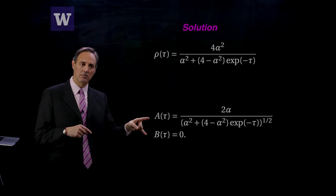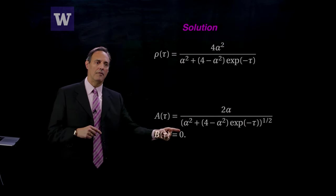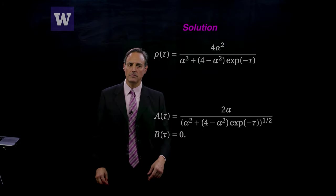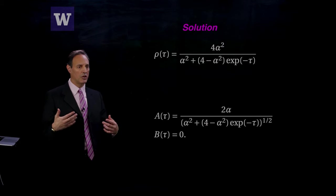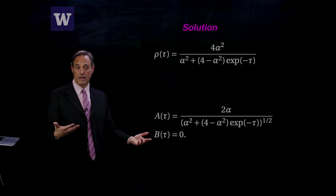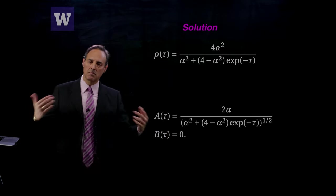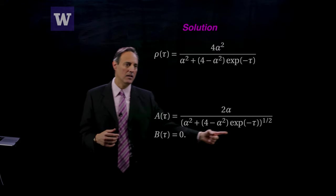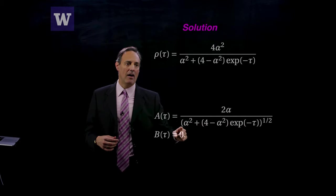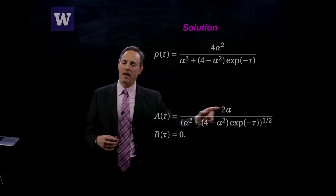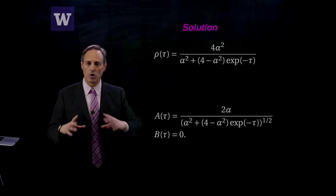First of all, b(τ) is zero, so that's out, and then a(τ) is this coefficient here: 2α/(α^2 + (4 - α^2)e^(-τ))^(1/2). With this factor of 2 taken out, let's look at what happens. b(τ) is zero, so we don't have to worry about it. For a(τ), notice what happens. As t gets big, in other words this tau goes to infinity, again this term drops out.